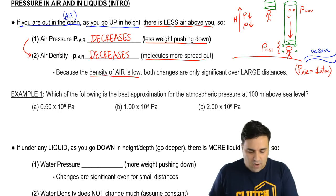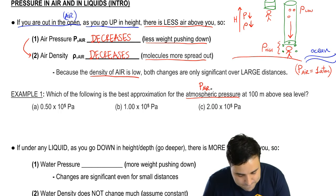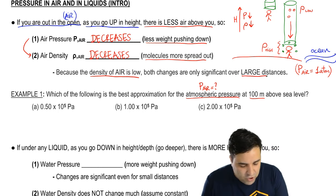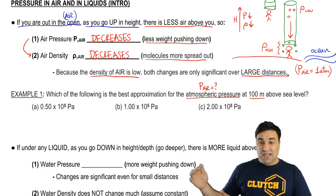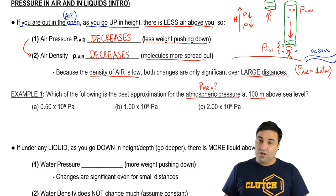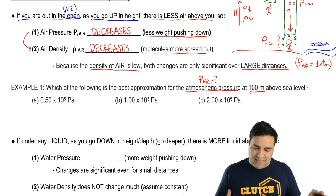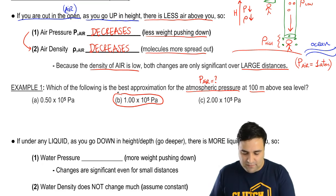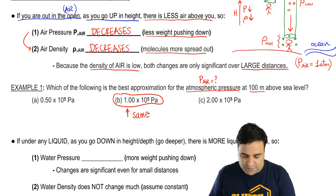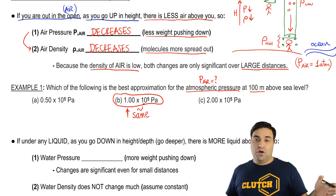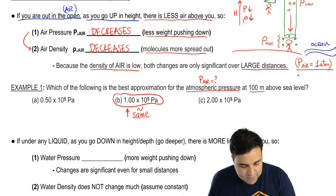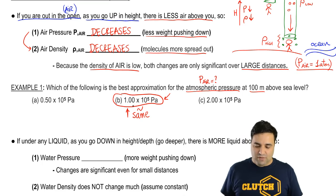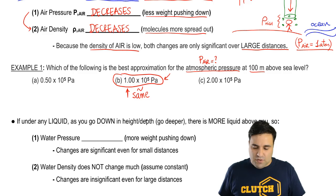Which of the following is the best approximation for the atmospheric pressure P_air at 100 meters above sea level? Remember, changes are only significant over very large distances — such as how high an airplane is flying. So 100 meters is not a very large distance, even though it would be pretty tall. It's not significant, therefore the atmospheric pressure here is basically going to be the same as it is at sea level — approximately 1 ATM. So if you're not sure which pressure to use, you should be using 1 ATM, which is 1.01 times 10 to the fifth Pascals. I rounded to 1.00. If they don't tell you, you can use that number.